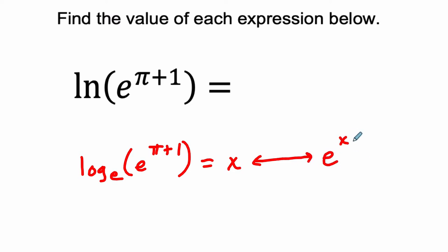e to some power x, that's what we're trying to find, x, equals e to the pi plus 1. And if you look at these two things here, you might notice my bases are the same. They're both the number e, and e is about 2.718, right? It's an irrational number.